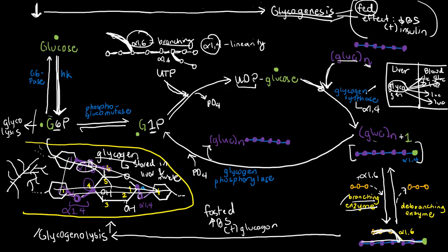To break down glycogen, we must counteract glycogen synthase and branching enzyme — breaking the alpha-1,4 and alpha-1,6 bonds. For the alpha-1,6 bond: if the enzyme that adds it is the branching enzyme, then the enzyme that removes it is the debranching enzyme. The debranching enzyme erases the alpha-1,6 bond, removing the orange branch chain from the original purple main chain — effectively removing the branch from the molecule.